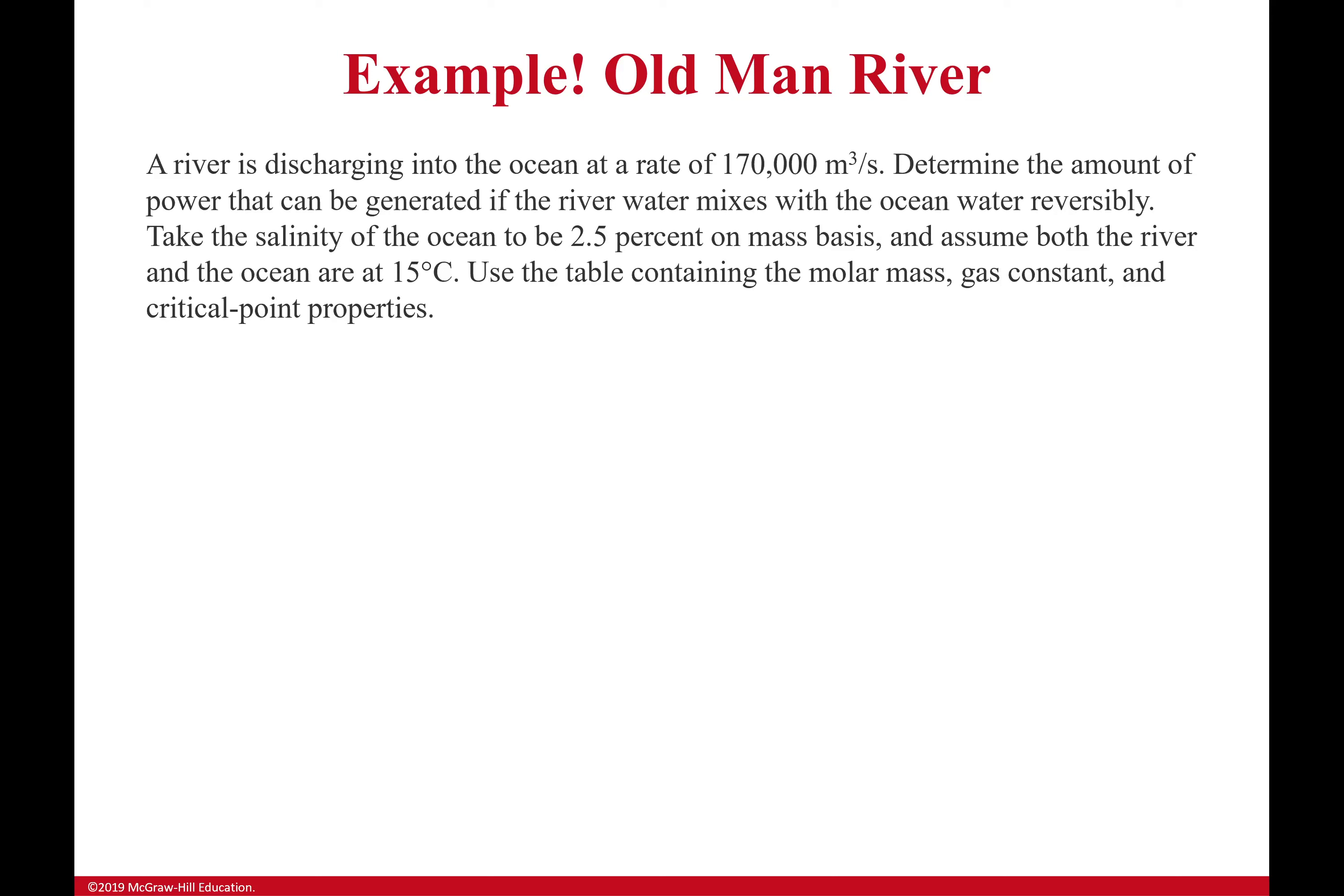Okay everybody, let's start into this example. A river is discharging into the ocean at a rate of 170,000 meters cubed per second. We determine the amount of power that can be generated if the river water mixes with the ocean water reversibly. We're going to take the salinity of the ocean to be about 2.5 percent on a mass basis and assume both the river and the ocean are 15 degrees celsius. We'll use the table containing molar mass, gas constant, and critical point properties to help ourselves out.